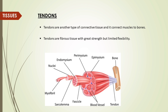Tendons are another type of connective tissue and they connect muscles to bone. Tendons are fibrous tissue with great strength but limited flexibility.